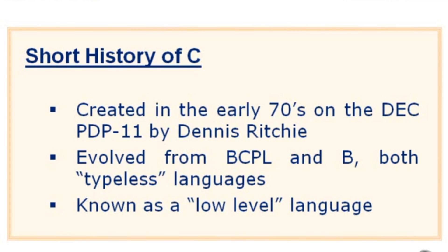Let's take a little tour in the Wayback Machine and do a short history of the C programming language. C was originally created in the early 70s, around 1972, by Dennis Ritchie on the Digital Equipment Corp PDP-11 system.